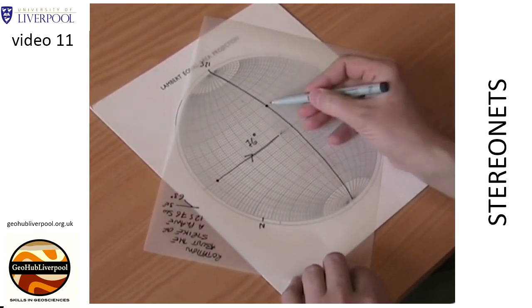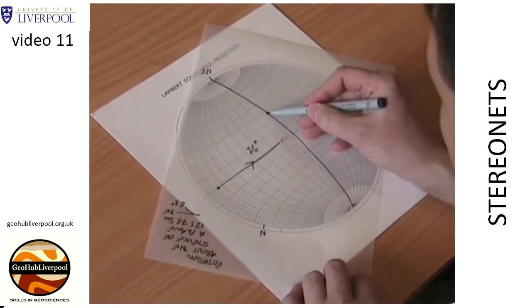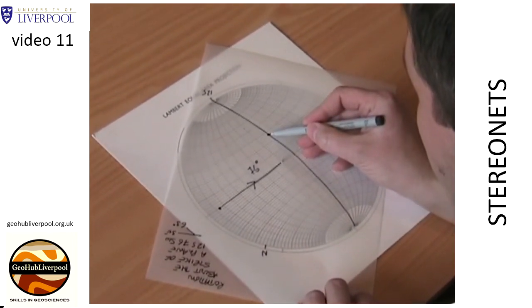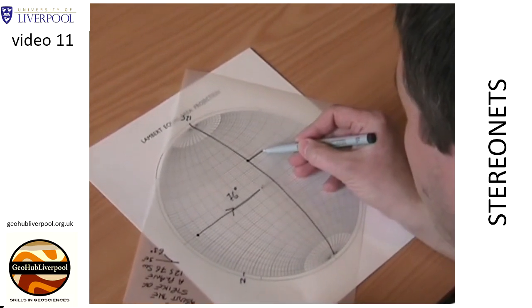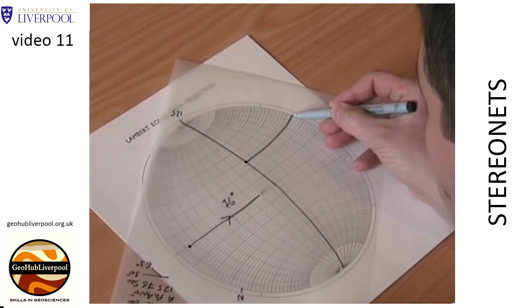Draw in a line from the pole to the center of the stereo net and mark in the rotation of 76 degrees. Hold the tracing paper in place and draw a line from the point representing the sedimentary structure along a small circle so that it also shows a rotation of 76 degrees.